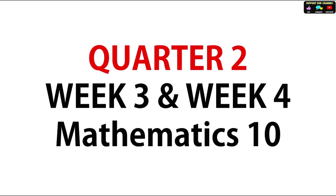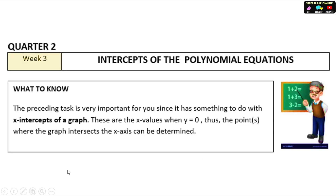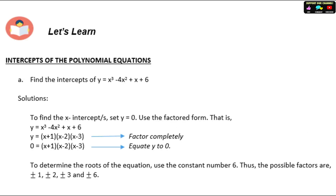Let's start. For Week 3, the topic is about intercepts of polynomial equations. Example letter A: find the intercepts of y equals x cubed minus 4x squared plus x plus 6. Solution: to find the x-intercepts, set y equal to zero.